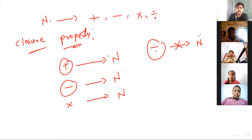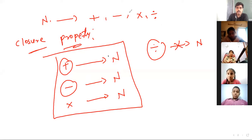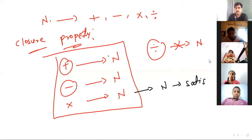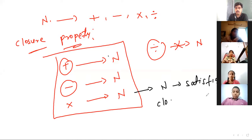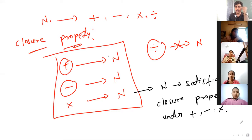So in these three cases, we can say natural numbers satisfy closure property. Natural numbers satisfy closure property under plus, minus, and multiplication. I have given you the homework for whole numbers — once we shall see.